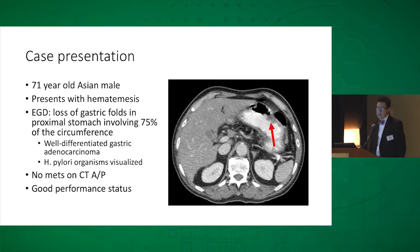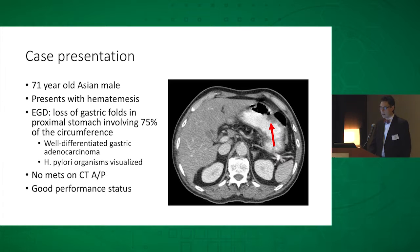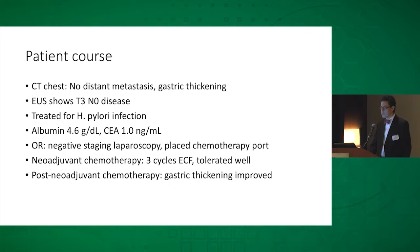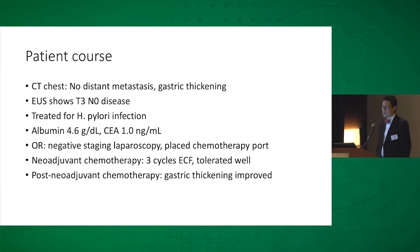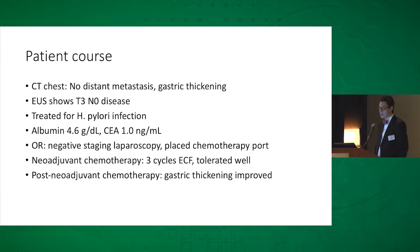Flipping back to our case: our 71-year-old Asian male had no metastasis on CT scan of the chest, abdomen, and pelvis, and had a good performance status. On EUS he had a T3N0 lesion. He was treated for his H. pylori infection — something not to overlook. He had a robust albumin level. I took him to the operating room, he had a negative staging laparoscopy, and I placed the chemotherapy port. Because his albumin was robust, he didn't need a feeding tube.